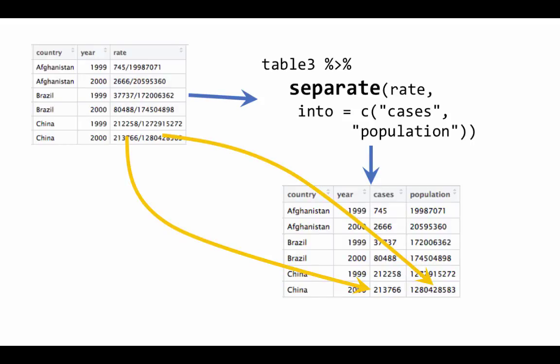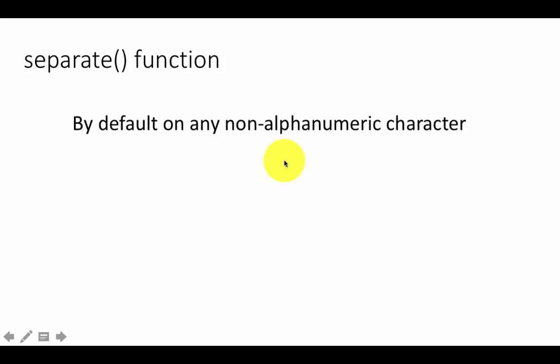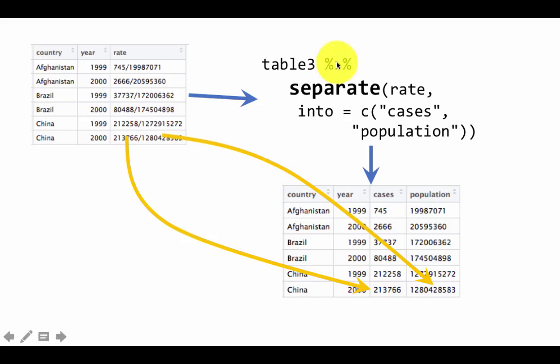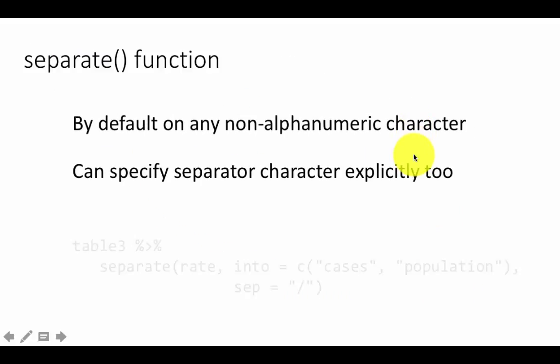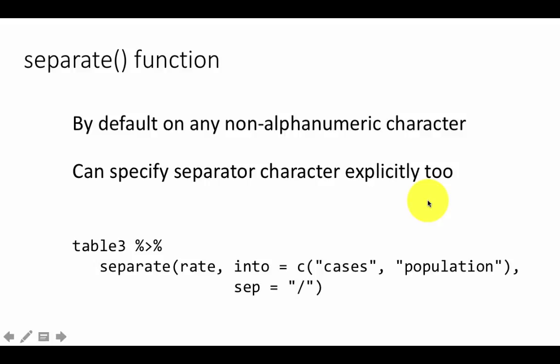The separate function works by default by separating on any non-alphanumeric character, which is why here we didn't specify what the separation character is. It just saw that the slash is the non-alphanumeric character that appears, and it did the separation automatically there. This is by default. But if you want, you can specify the separator character explicitly, like I've shown here.